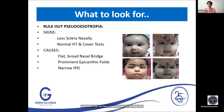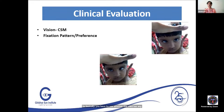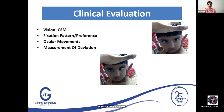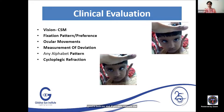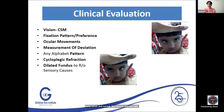A word of caution: sometimes true esotropia can coexist with pseudo-strabismus, so keep children under regular follow-up. For clinical evaluation, check for fixation preference or significant amblyopia. If the squint is alternating, the child freely takes up fixation in either eye. Look at central steady maintained fixation in both eyes, measure the deviation, check for alphabet patterns like A or V patterns, and do cycloplegic refraction and dilated fundus, as sensory esotropia can also present this way. The primary diagnosis given early onset, normal history, and constant angle would be infantile esotropia.